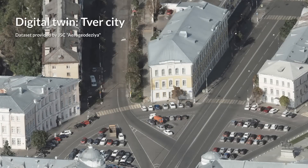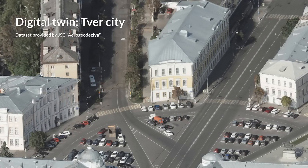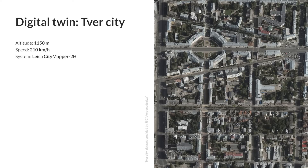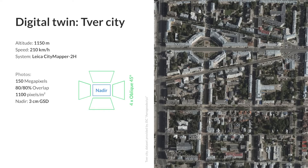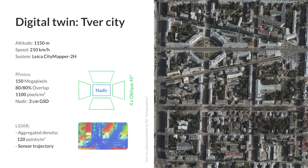The first project we would like to show is a digital twin of the city of Tver. In this project, photos were captured with a Leica CityMapper 2H system from an altitude of 1 km. 150-megapixel photos were taken both from a nadir view with 80% side and 80% forward overlap, as well as from an oblique view at 45 degrees. In addition to the imagery data, a laser sensor was scanning the city with a density of 120 points per square meter, and simultaneously the trajectory of the aircraft was recorded.